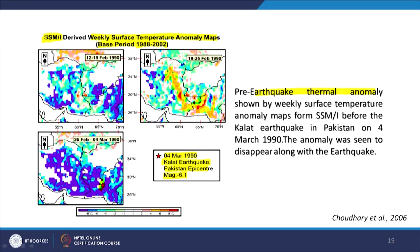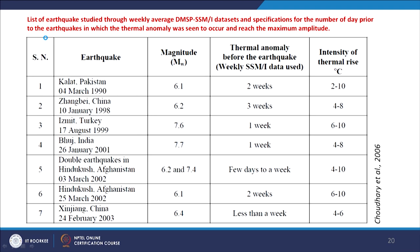For applications like pre-earthquake thermal anomaly studies, we need to cover a large area, and therefore passive microwave remote sensing can be a very apt dataset. Various earthquakes have been studied using data from the DMSP satellite with the SSMI radiometer. The thermal anomaly detected in Kalat was about 2 weeks before; in the case of Zhangvi it was 3 weeks before, with 1-week resolution since the data was weekly average.